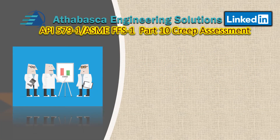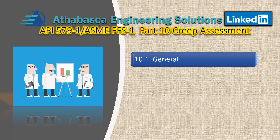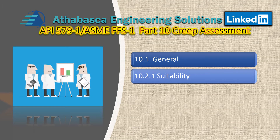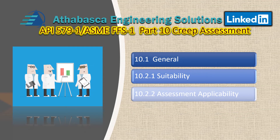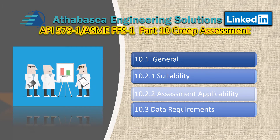Hello, we're back. This time we're going to dive into Part 10, CREEP assessment. In this video, we're going to go into Section 10.1, and this is the 2016 edition of API 579. Then we're going to go into 10.2.1, suitability for service, then into 10.2.2, assessment applicability, and then we'll go into 10.3, data requirements.